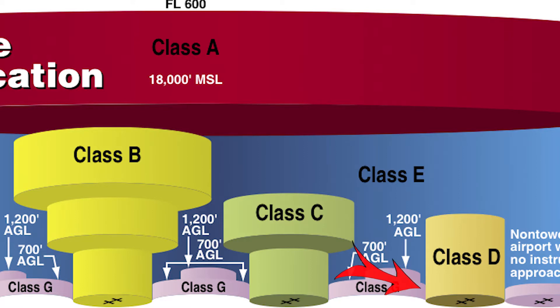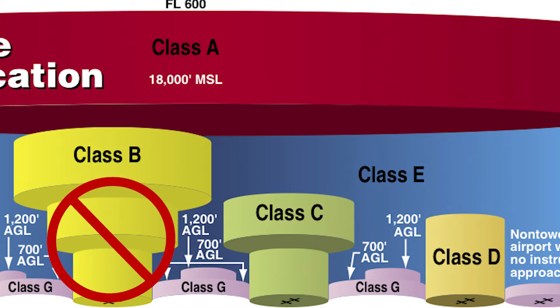It's recommended that you make your request at least 90 days in advance of when you will need that authorization. The altitude is from the surface upward towards a specific altitude. There are no shelves like Class B or Class C airspace, and Class D airspace is shaped like a single cylinder. The outer radius of Class D airspace is variable, but it's generally 4 nautical miles.